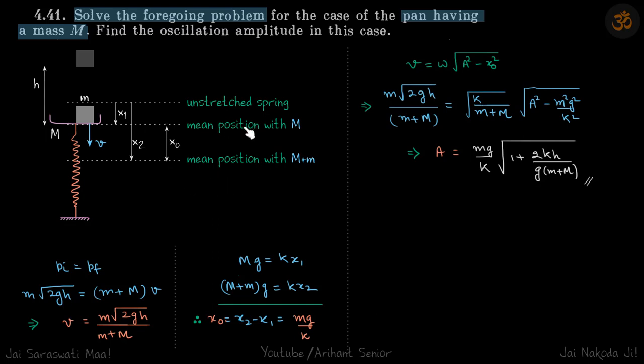At the mean position with M, Mg equals k x₁. At the new position, k x₂ equals (M + m)g. If you subtract these, you get x₀ equals x₂ minus x₁ equals mg/k. So we got x₀ for this equation.